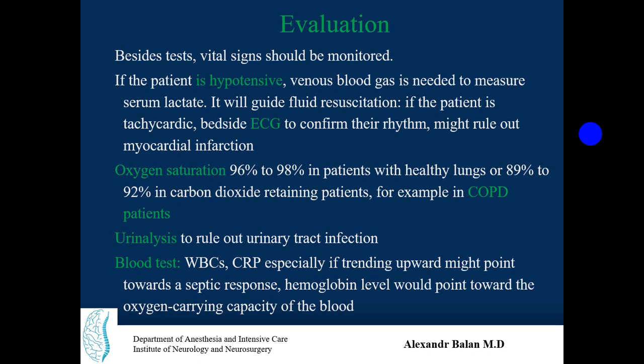Oxygen saturation target is 96–98% in patients with healthy lungs, and 89–92% in carbon dioxide-retaining patients, for example those with COPD or chronic obstructive pulmonary disease. Urinalysis should be performed to rule out urinary tract infection. Blood tests including white blood cells and CRP or C-reactive protein, especially if trending upward, may point towards a septic response.